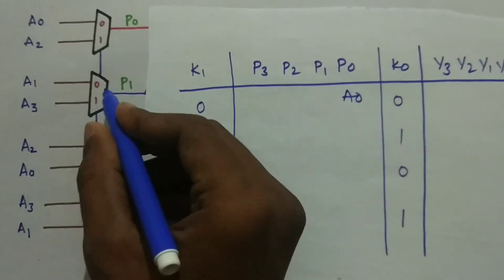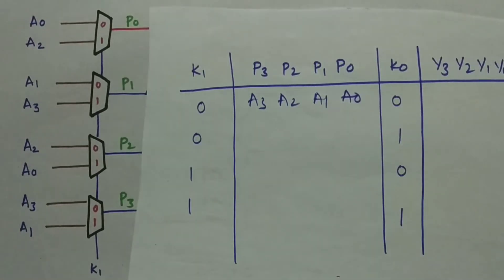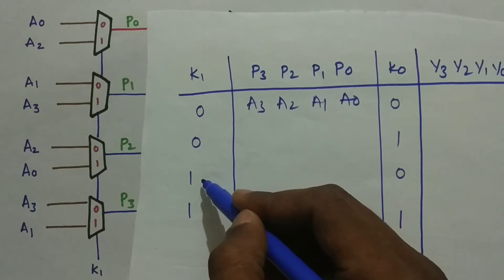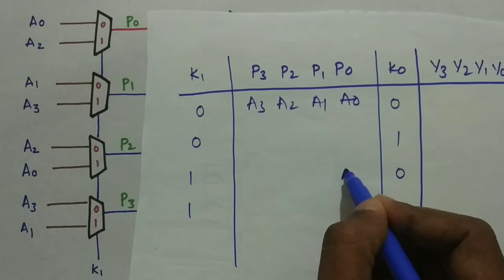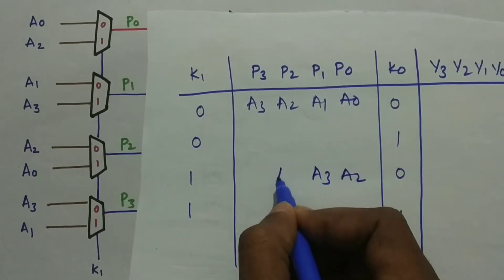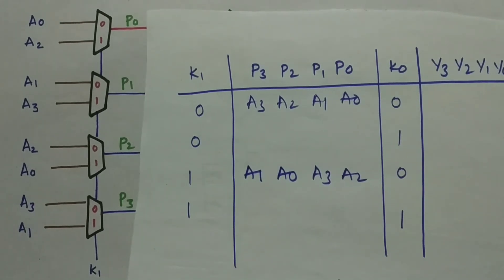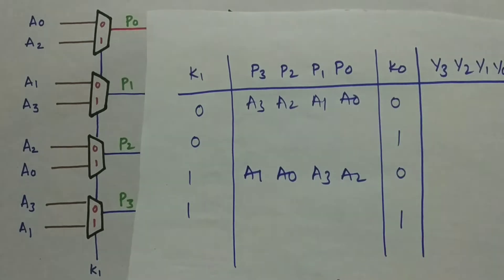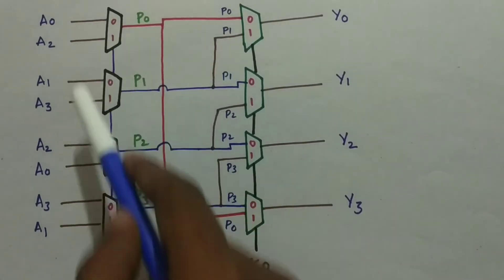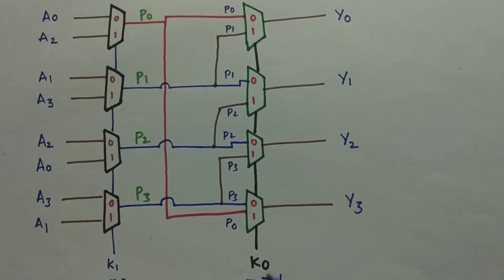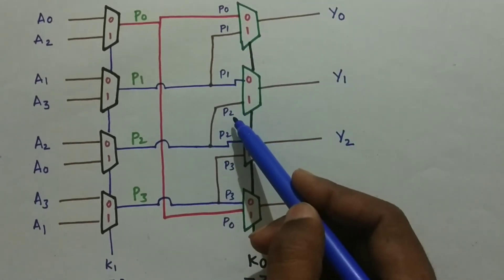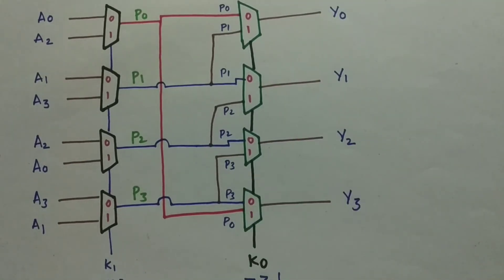When K1 is 0 the output is P0=A0, P1=A1, P2=A2, P3=A3 — no shift. When K1 is 1 we perform rotate right by 2: the order becomes A2, A3, A0, A1. Now for the K0 multiplexers: when K0 is 0, P0 through P3 pass directly to Y0 through Y3. When K0 is 1, we get Y0=P1, Y1=P2, Y2=P3, and Y3=P0, performing rotate right by 1.